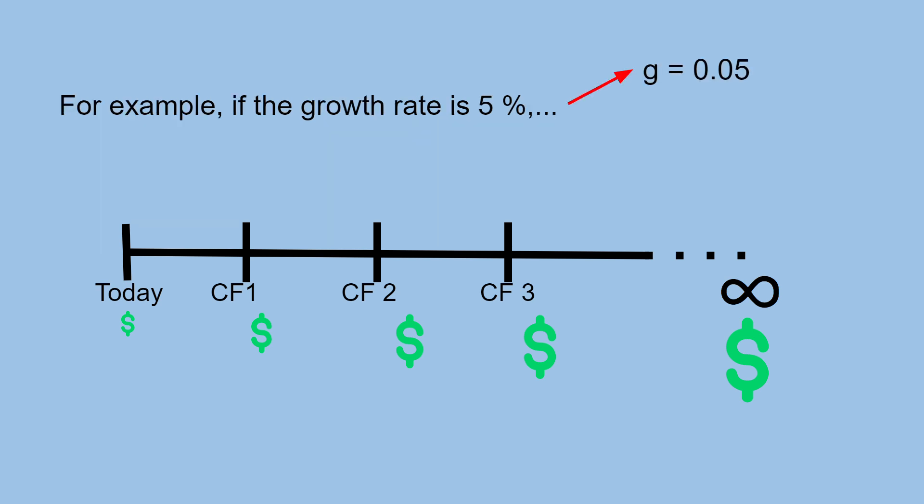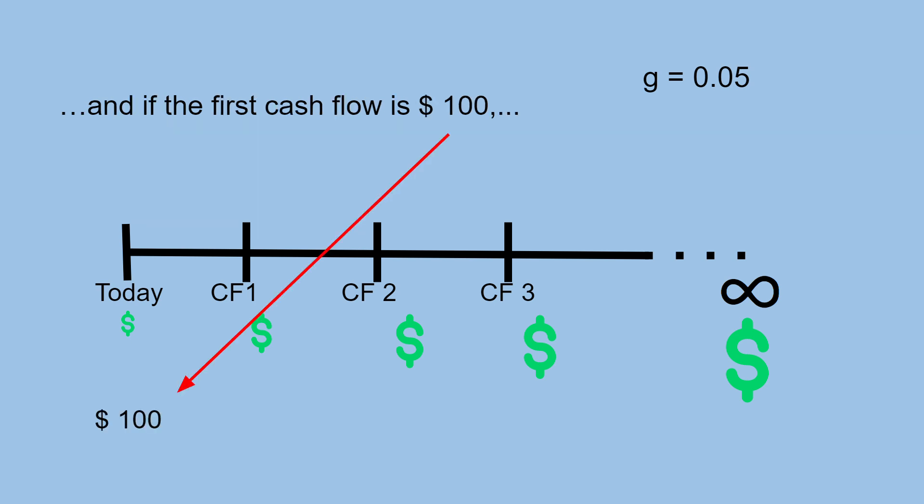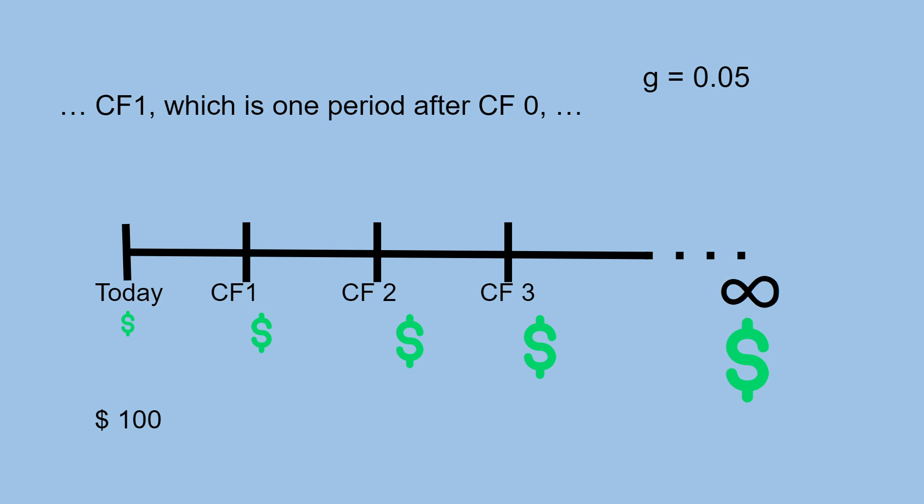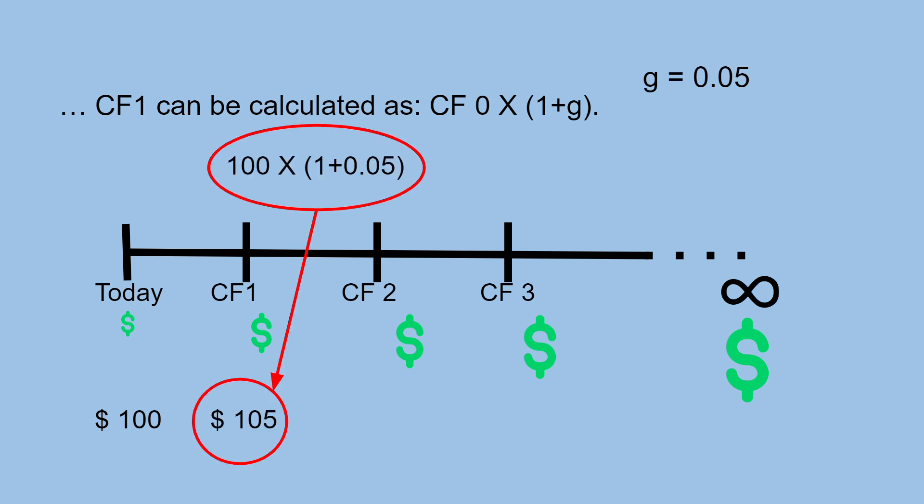For example, if the growth rate is 5% and the first cash flow is $100, cash flow 1 — which is one period after cash flow 0 — can be calculated as cash flow 0 times (1 plus G, or growth rate): 100 times 1 plus 5% gives us $105.